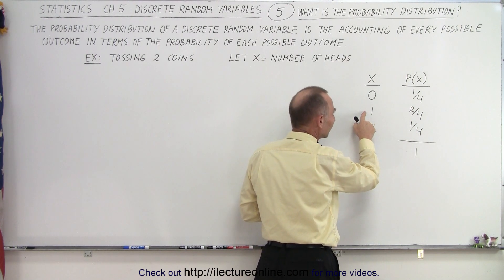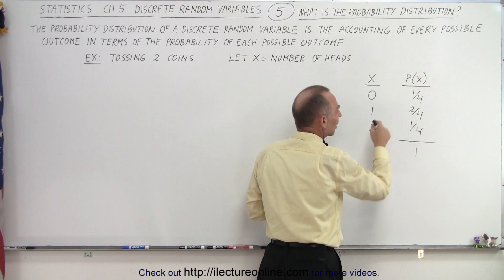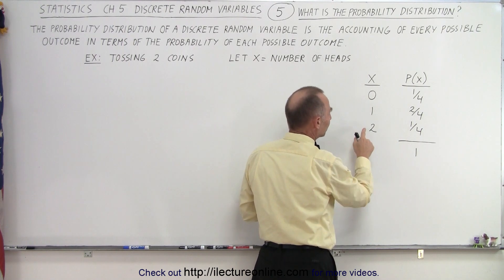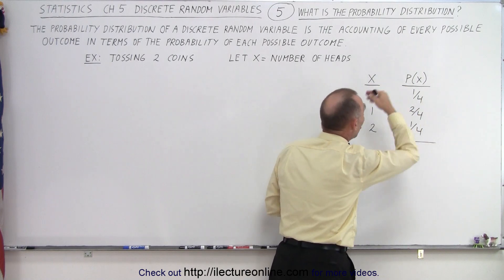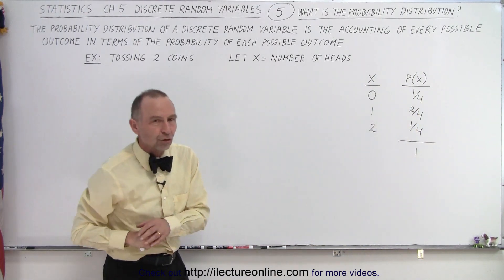The probability that one of the two will be a head is two out of four, and the probability that both will be a head is one out of four. This here is called a probability distribution.